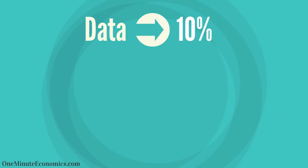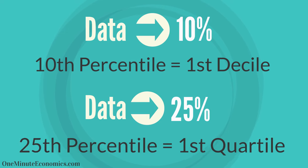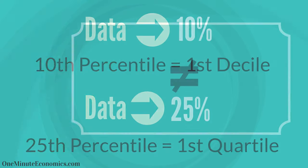If we split the data into 10% groups, we can also say first decile instead of 10th percentile. If we split it into 25% groups, we can say first quartile instead of 25th percentile, and so on.